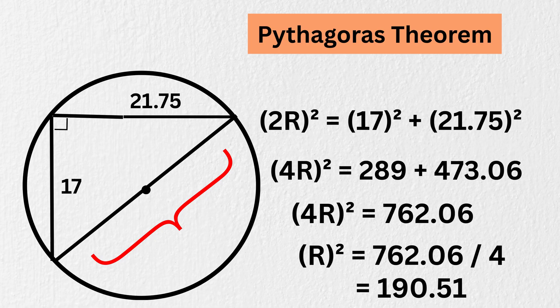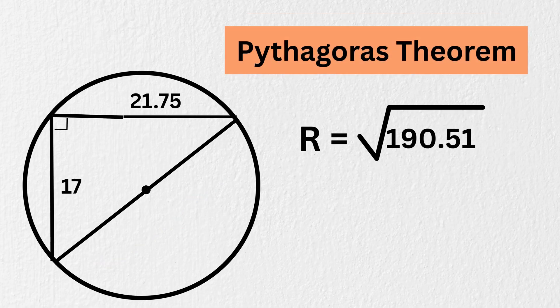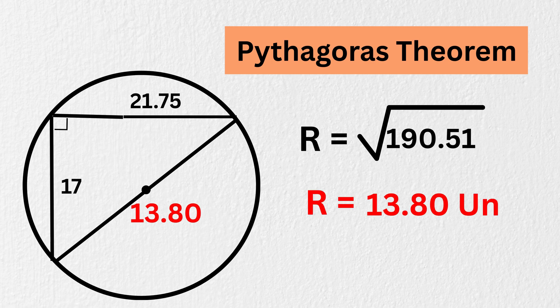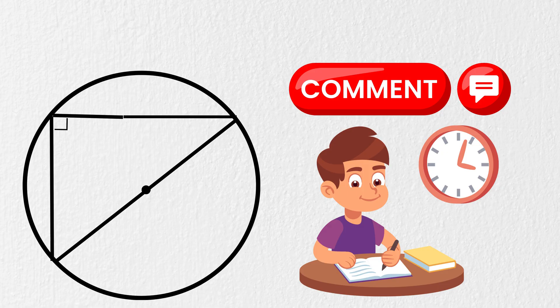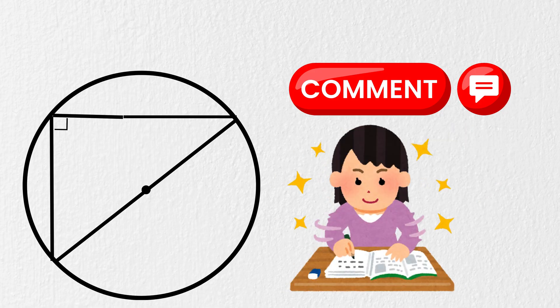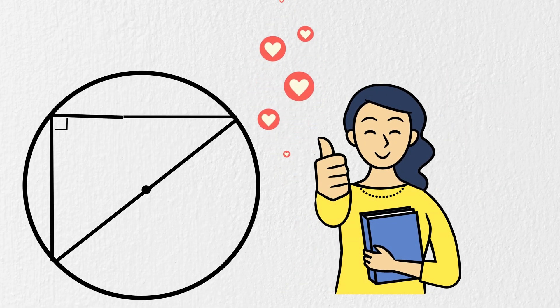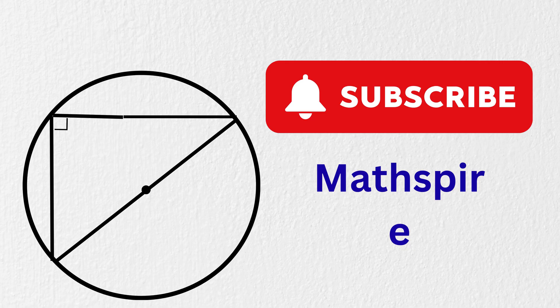Thus R squared equals 762.06 divided by 4, which will be 190.51. And therefore, R equals the square root of this, which is approximately 13.80 units, and that's it. This is our final answer. Do comment if you have learned something new in this video, and please don't forget to like and subscribe our channel, Mathspire. Thanks! Keep on learning!